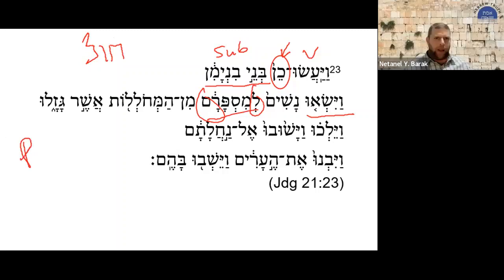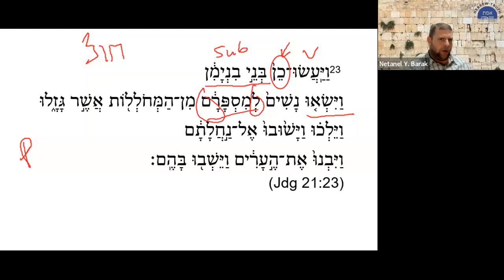Essentially the polel is the equivalent of the pi'el in the ayin-vav and the ayin-ayin verbs. So verbs whose second root letter is a vav, as in this case, takes the form of the polel. Let me clarify that further.